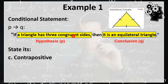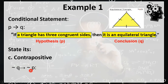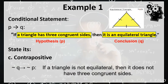The contrapositive of the given conditional statement is represented by the symbol not Q implies not P. So the hypothesis here is the negation of the conclusion of the conditional statement, and the conclusion is the negation of the hypothesis of the given conditional statement. Contrapositive is: if a triangle is not equilateral, then it does not have three congruent sides.